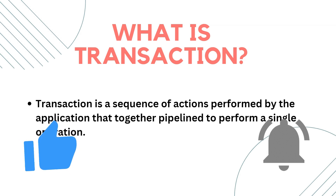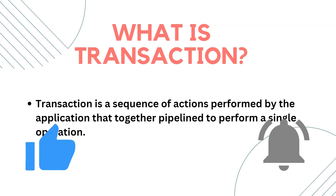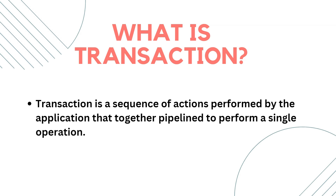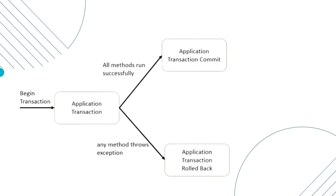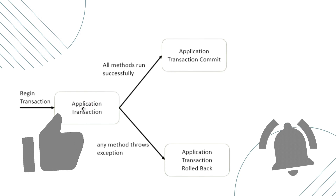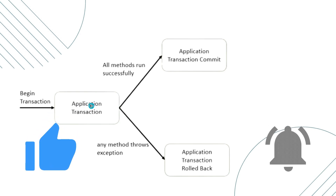A transaction is a sequence of actions performed by the application that together pipeline to perform as a single operation. For example, if you want to perform multiple CRUD operations, we need to add these CRUD operations as one single operation and perform them in one shot. If any one of the CRUD operations fails due to system unavailability or a database issue, we need to roll back all the operations.